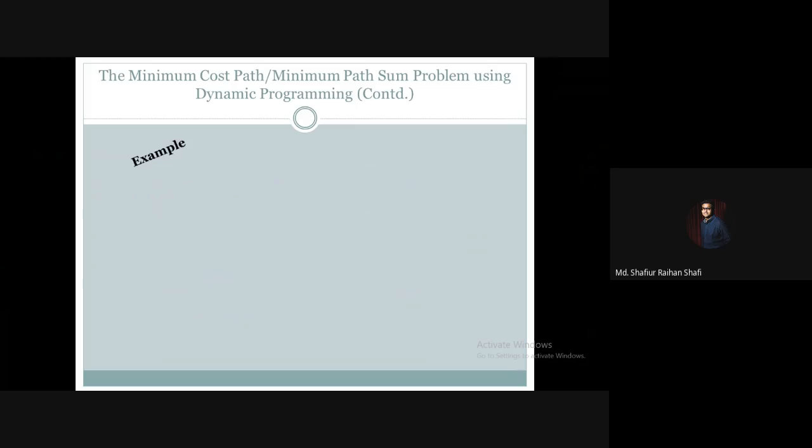Hello there, welcome to the advanced algorithm course. In this tutorial we're going to see an example of how we can implement the minimum cost path or the minimum path sum problem using the dynamic programming paradigm. In the previous tutorial we discussed the general concept of how we can solve this problem using dynamic programming, and in this tutorial we're going to see such an implementation.